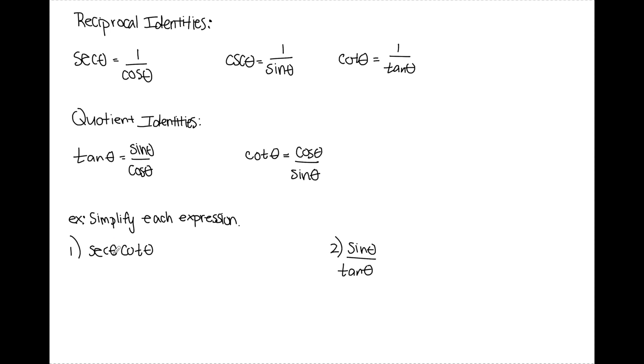Whenever I have something like this, or really any kind of trig expression that I'm trying to simplify, my first goal is always going to be to rewrite everything in terms of sine and cosine. Once everything's in terms of sine and cosine, things should start canceling out. So I'm going to start with secant. Secant I can write as 1 over cosine, and cotangent I can write as cosine over sine.